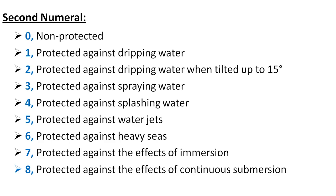Two indicates protection against dripping water in the vertical direction when the device or equipment is tilted at 15 degrees. Three indicates protection against spraying water, where water enters the device up to 60 degrees from vertical. Four represents protection against splashing water from all directions. When the second numeral is five, it is protected against water jets — limited ingress is permitted. Six indicates protection against heavy seas or powerful water splash jets, and water penetration should not have any effect on the operation of the equipment.